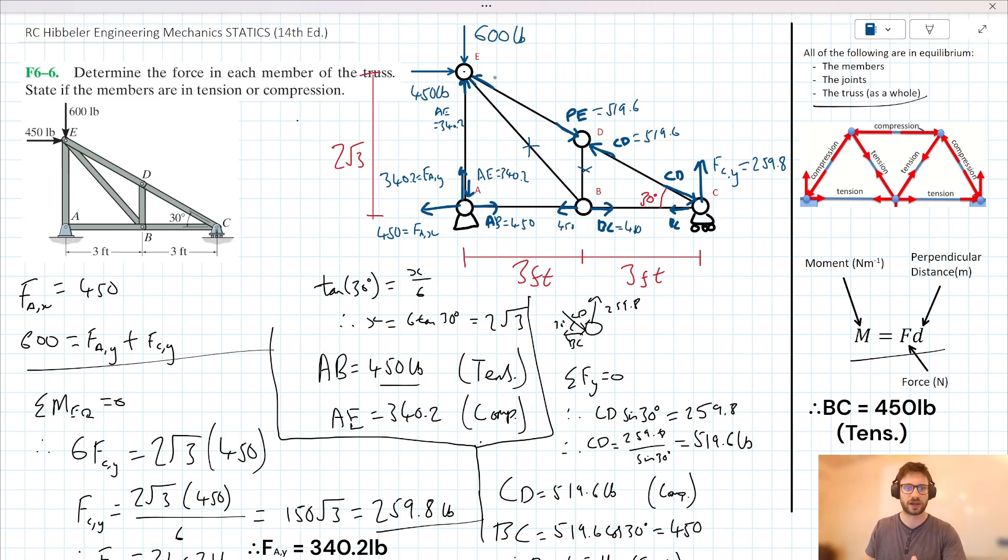We note then that DE acts like this and that DE takes a value of 519.6 as well. So we have DE then acting on joint E like this. And there we have it. To be extra sure, we could look at joint E and just double check that it's in equilibrium. I've double checked it personally and it is in equilibrium. We don't need to repeat ourselves here basically. So these are all our forces. Just to be complete here, we could add whether DE is in compression or tension. Let's say DE is equal to 519.6 and the forces are acting like that. So we can say that DE is in compression. Okay.